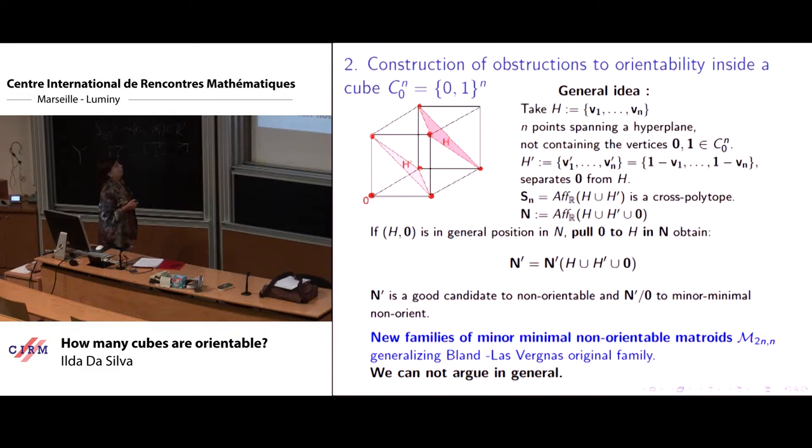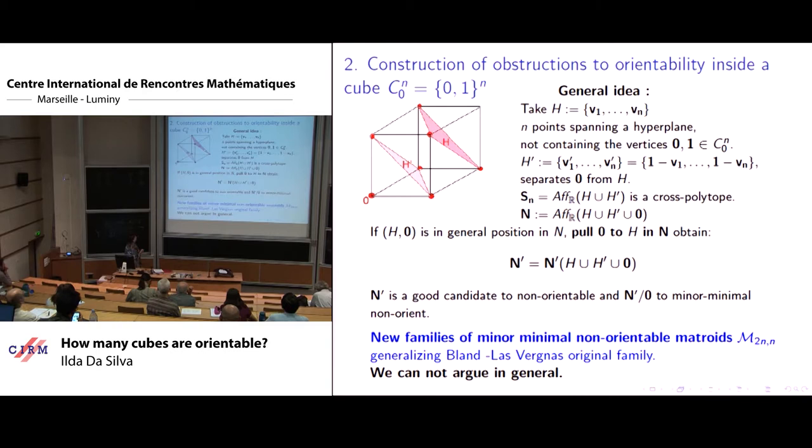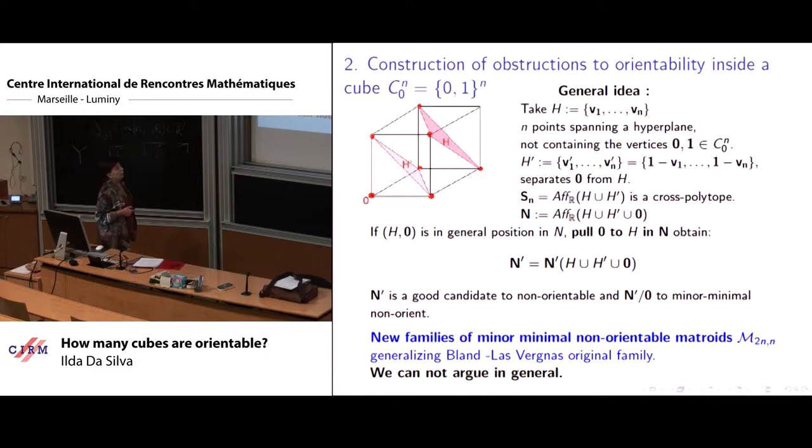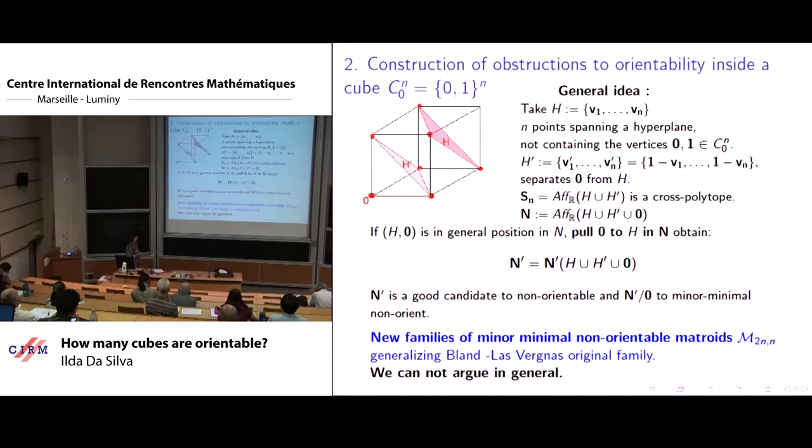We take the general idea: take an n point defining a hyperplane of the real cube, take the opposite hyperplane with respect to the center of the cube, take a point separated by the from the first of the hyperplane by the other. And then if H, the first hyperplane, and the point O are in general position in that sense that we can pull, then pull O to H, and one obtains a good candidate to non-orientable, and then contracting by O, a good candidate to minor minimal non-oriented matroids.